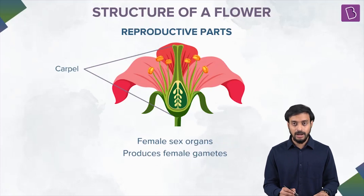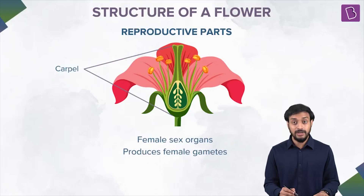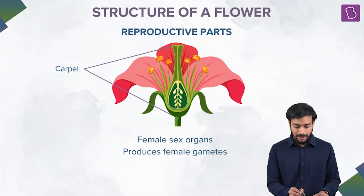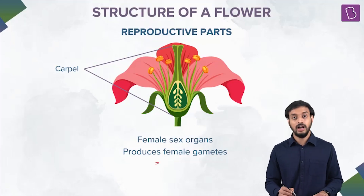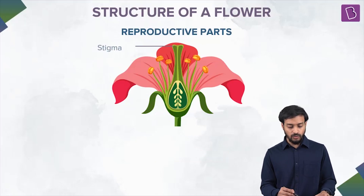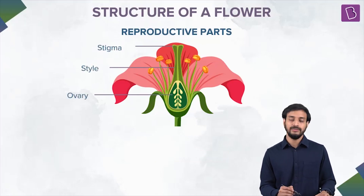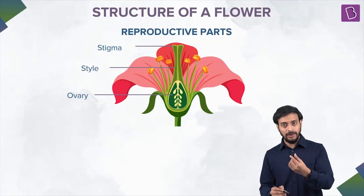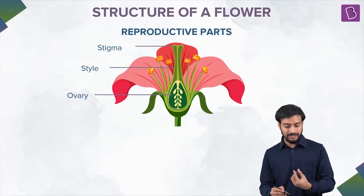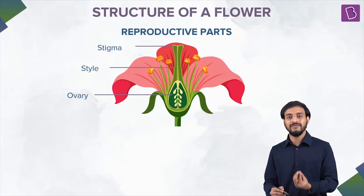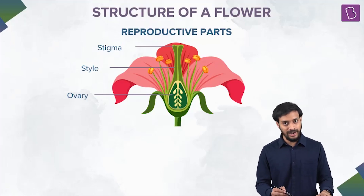Now these are the carpels — the female sex organs, which produce the female gametes. The carpel is comprised of the stigma, the style, and the ovary. The stigma is the topmost part; the tube-like part is the style; and the ovary contains the female gametes.